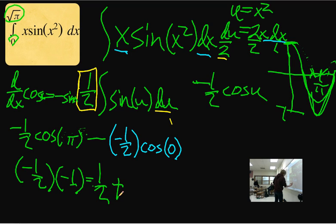So one times negative one half is negative one half. Distribute this negative. It becomes positive one half. The answer is one.